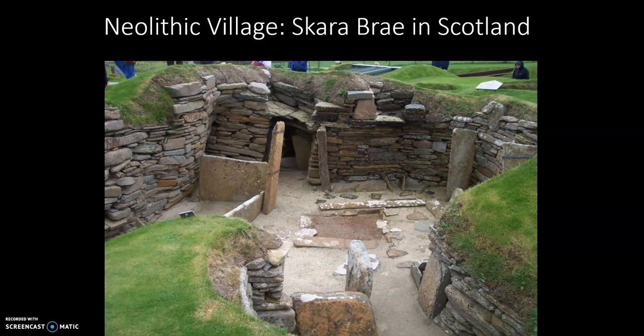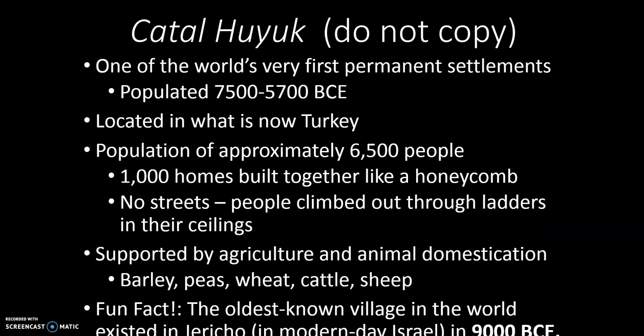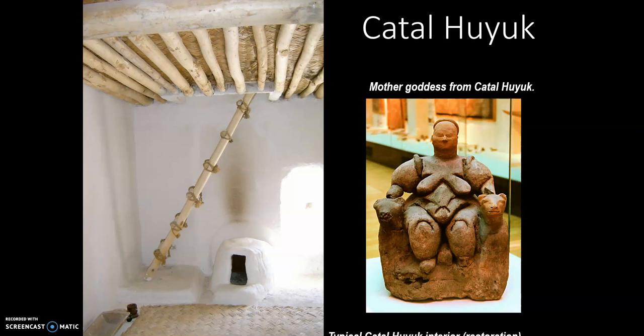Here we see an image of Skara Brae in Scotland — these are the remains of a Neolithic village. You can see that it's mostly subterranean, carved out in the hillside. There is also the settlement of Çatalhöyük, located in present-day Turkey. This is one of the first permanent settlements and it's unique in that, like Skara Brae, it's mostly subterranean, but residents would exit through the roof of their homes. You had a mat for sleeping on, a hearth to keep a fire, and then you would exit through the ceiling.